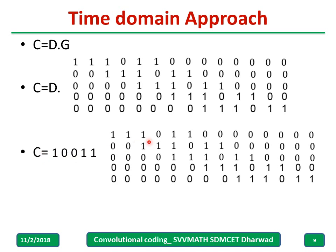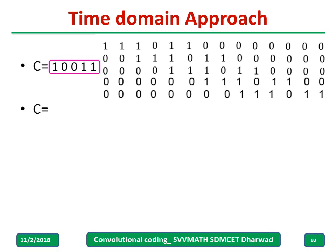Multiply D with G to obtain the codeword. It is a very simple method — multiply each row of D with each column of G and add. For example: 1 into 1 is 1, 0 into 0 is 0, 0 into 0 is 0, 1 into 0 is 0, 0 into 0 is 0. Adding all these gives 1.